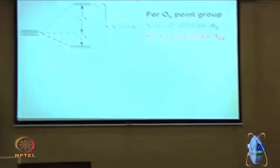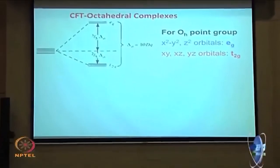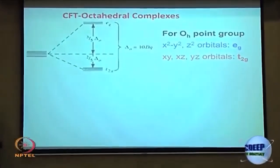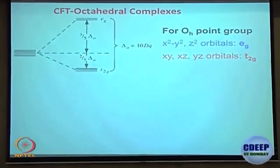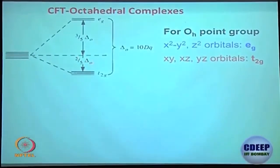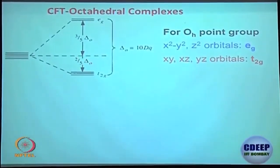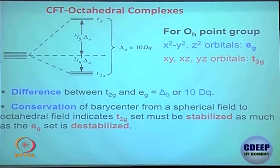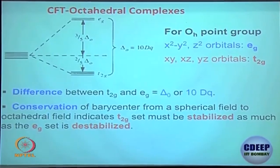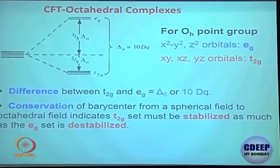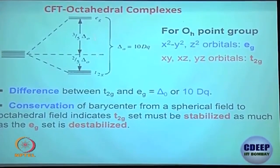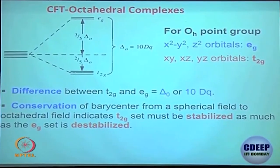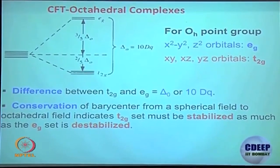The stabilization for T₂g is 0.4 Δ₀ (or 4 Dq) and the destabilization for E_g is 0.6 Δ₀. This is what we calculated and discussed.